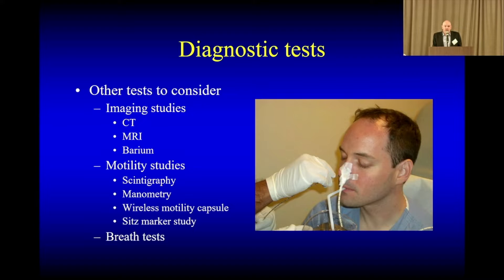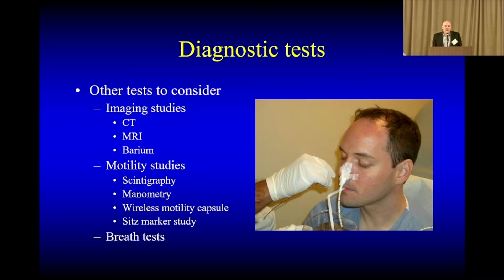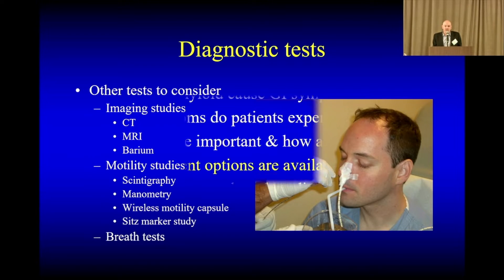There are a number of other tests which are out there — imaging tests, motility studies, and breath tests that will essentially look at the contractions throughout the gut, the stiffness of the gut, and the breath test can look at small intestinal bacteria. The challenge with all of these is that they are all non-specific. So there's not really a pattern that you'll see where you can say yes, this is amyloid. But it may give information to help guide what to do as next steps in terms of therapy.